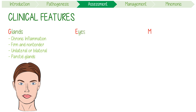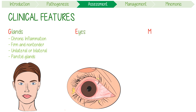E stands for eyes that are dry and irritated due to a reduction in the aqueous component of tears. This is medically termed keratoconjunctivitis sicca and gives patients an unpleasant, gritty, or sandy feeling in their eyes.